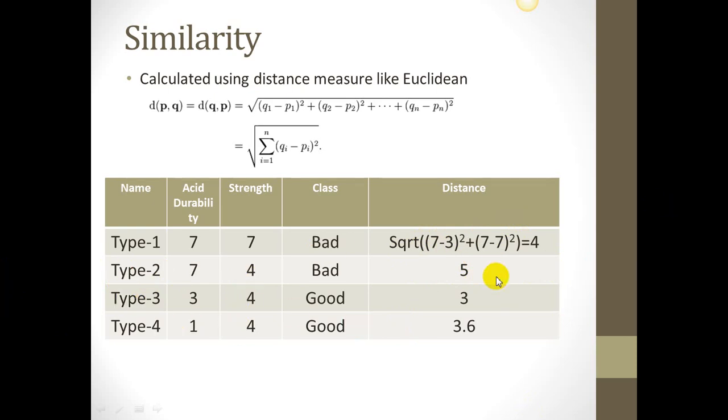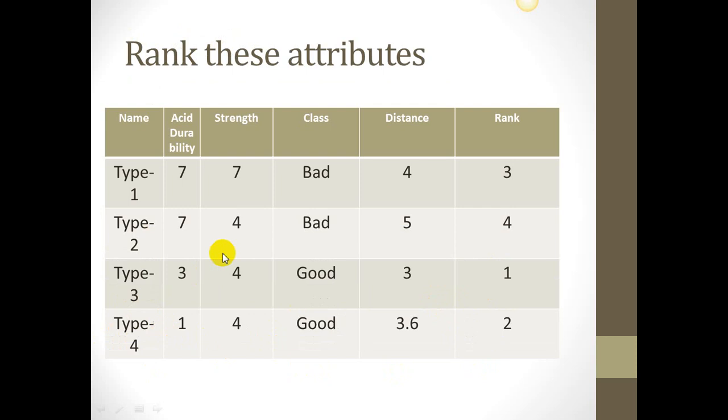The distance from type 3 comes out to be 3, and distance from type 4 comes out to be 3.6. Now let's rank which are the neighbors to these particular types of tissues. So we can rank them according to the minimum distance.